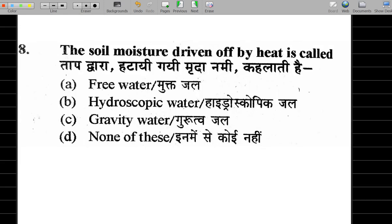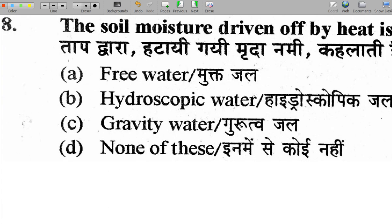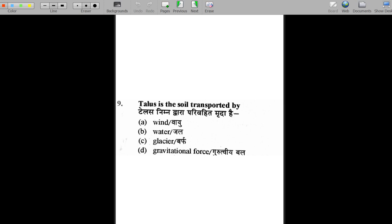Question 8: soil moisture driven off by heat — what type of water is removed? We have free water, hygroscopic water, and gravity water. When soil moisture is removed by raising temperature, it is hygroscopic water that is driven off. So option B is correct.